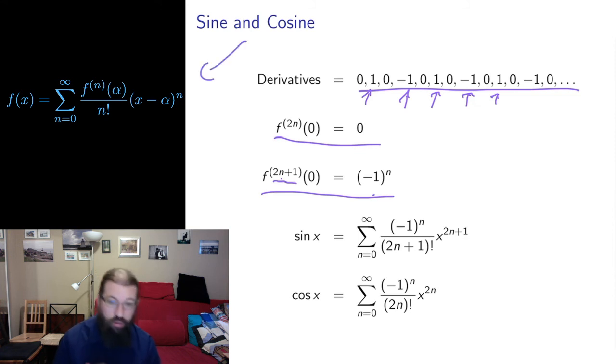So I can put that into this form if I match that up with the power of x minus alpha. And here alpha is 0, so it's just the power of x. So in the general form, the factorial in the denominator, the degree of the derivative, and the exponent are all the same. So if I match this and this and this as all 2n plus 1, I get this general form for a Taylor series for the sine function centered at the origin.